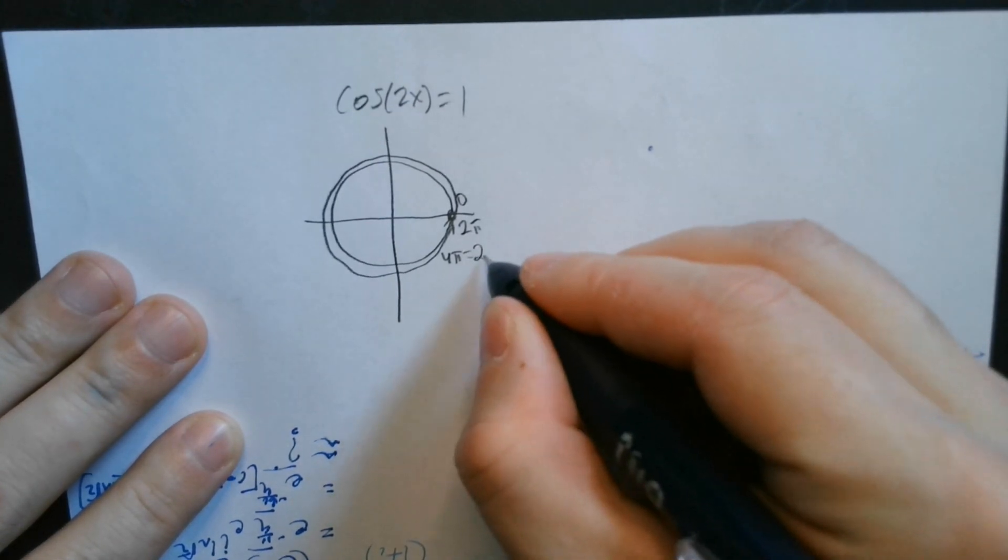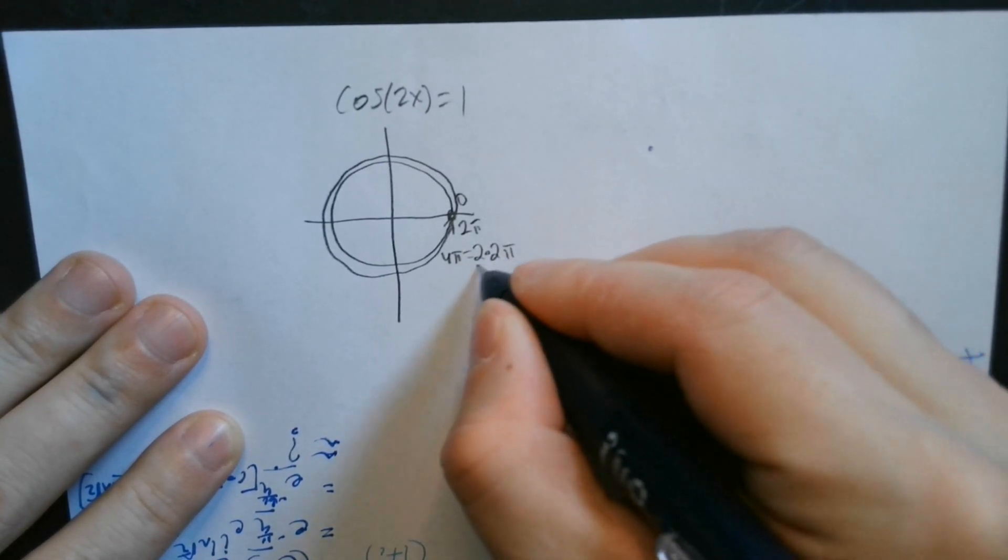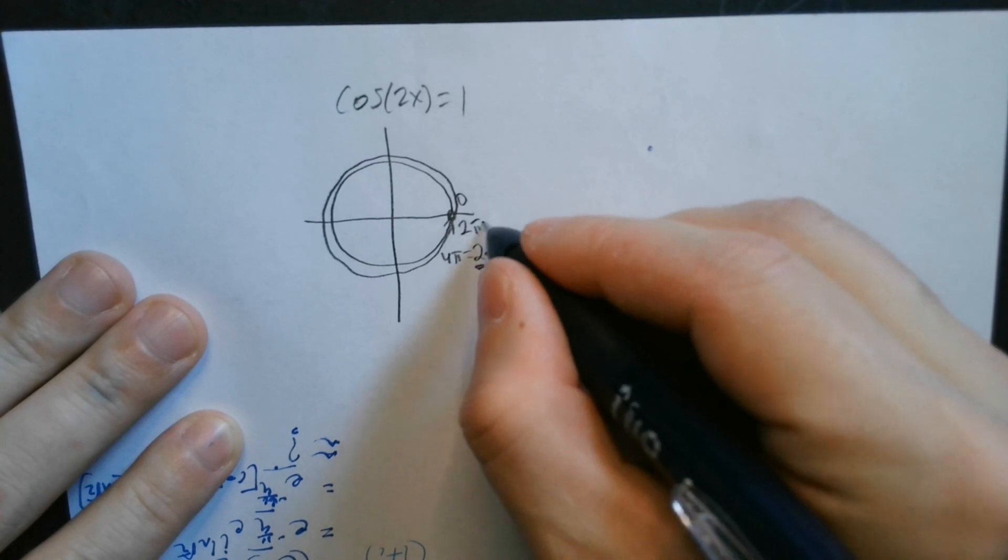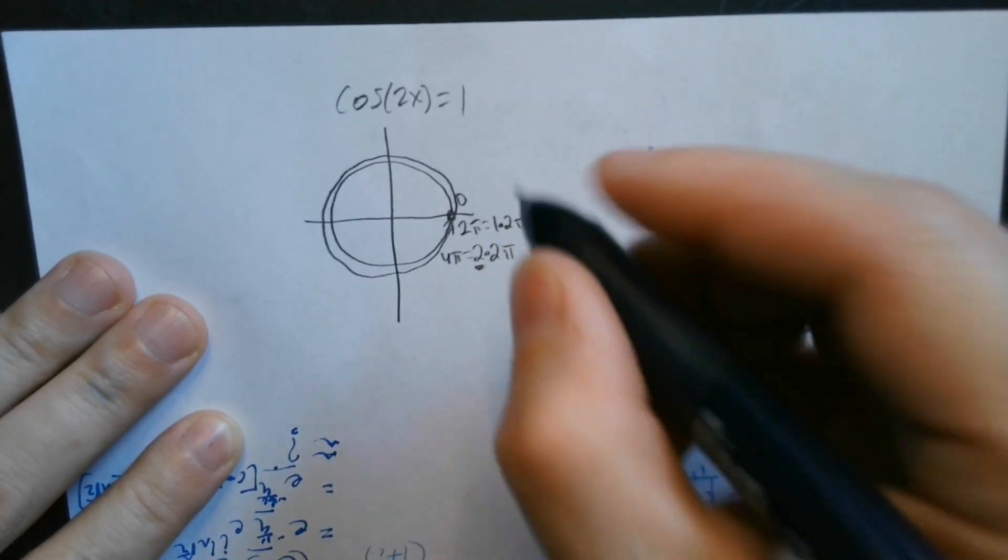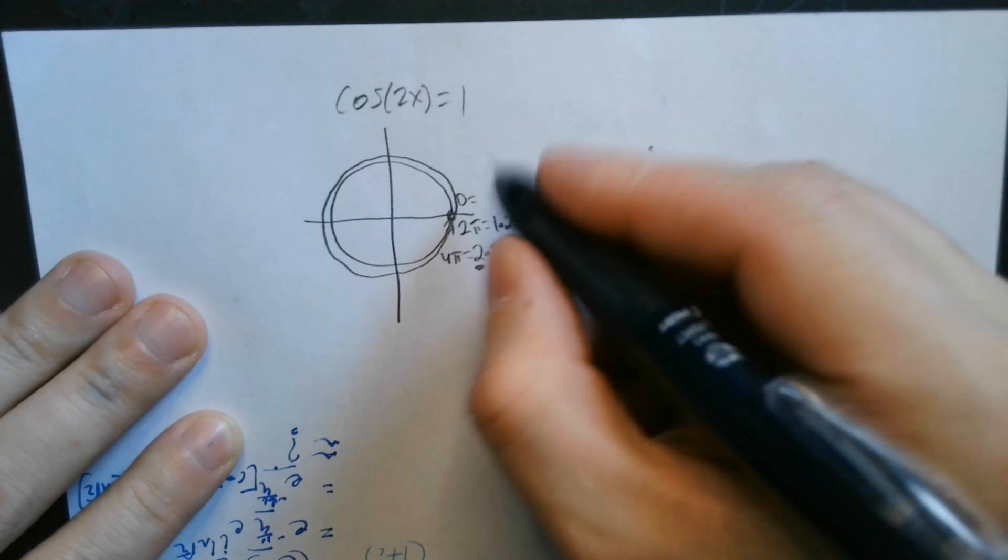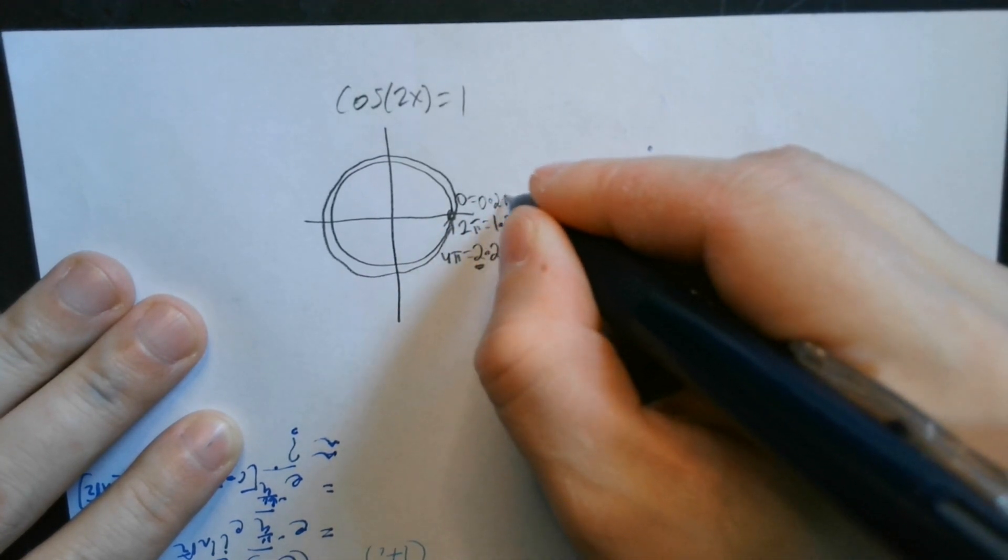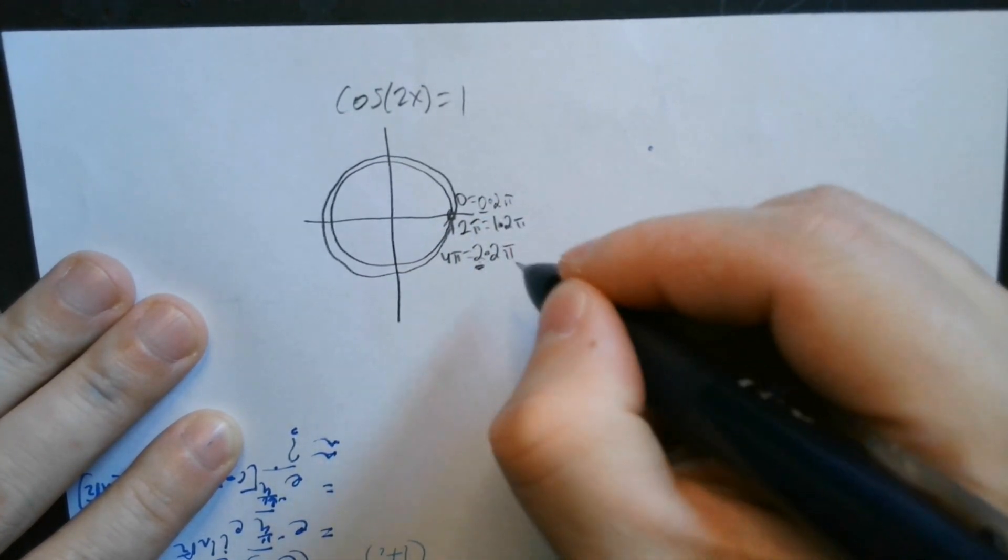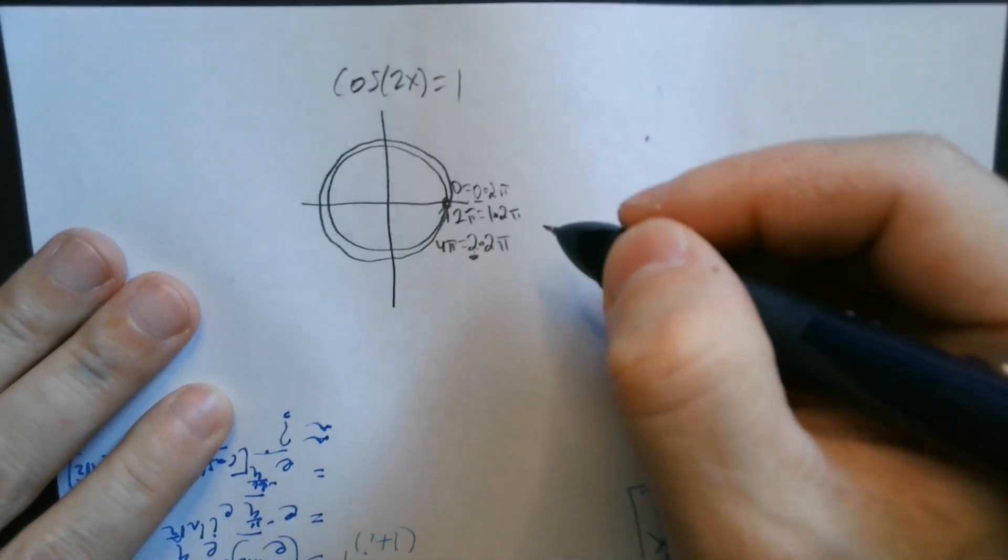When you say 4 pi, that really means 2 times 2 pi. It's a multiple of 2 pi. When you say 2 pi, we mean 1 times 2 pi. When you say 0, you can imagine it's really 0 times 2 pi. So 0, 1, 2, those are the multiples of 2 pi we're talking about here.